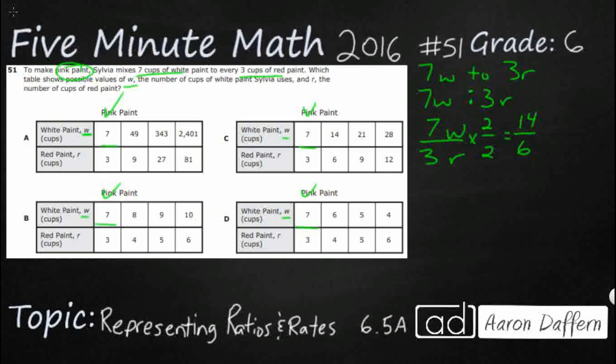So, 14 over 6 pops up here. Let's see what happens if we do 7 thirds times 3 thirds. We always make equivalent fractions by multiplying a numerator and denominator that are the same, because that means they're equal to 1. 2 halves is equal to 1. 3 thirds is equal to 1. So, that's 21 ninths. So, I've got that there. Let's see what happens if I've got 7 thirds times 4 fourths, and that's going to give me 28 twelfths.